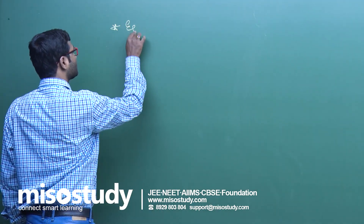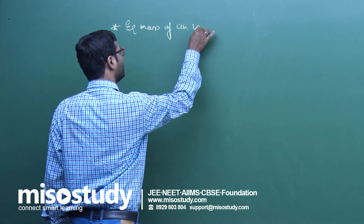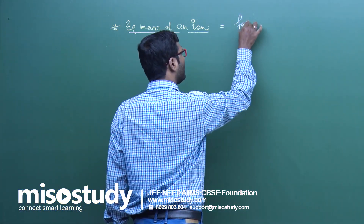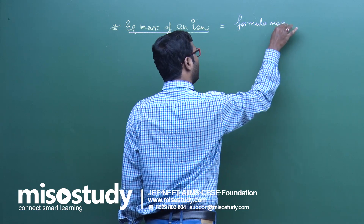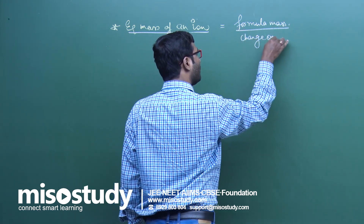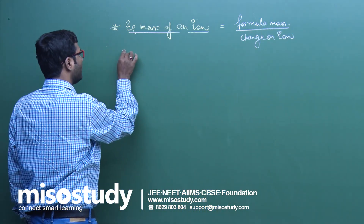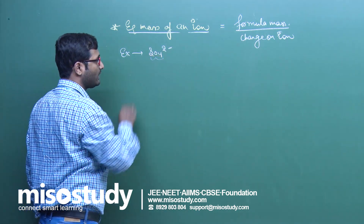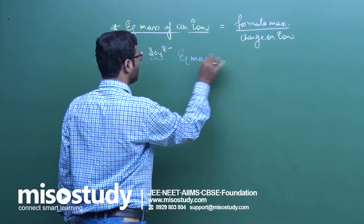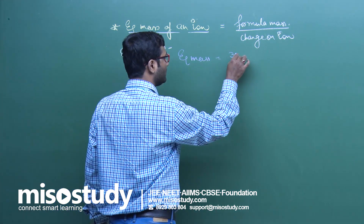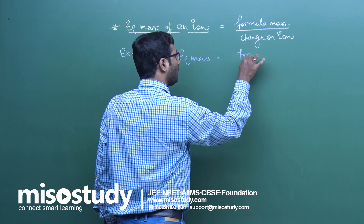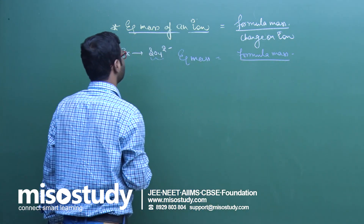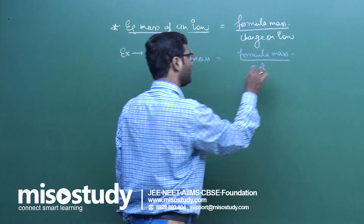Today, if anyone asks you how to find the equivalent mass of an ion, the equivalent mass of an ion will be equal to formula mass upon charge on the ion. For example, if we consider the sulphate ion SO4²⁻, the equivalent mass will be equal to (32 + 4×16) = 96, divided by the charge of 2, giving 48.